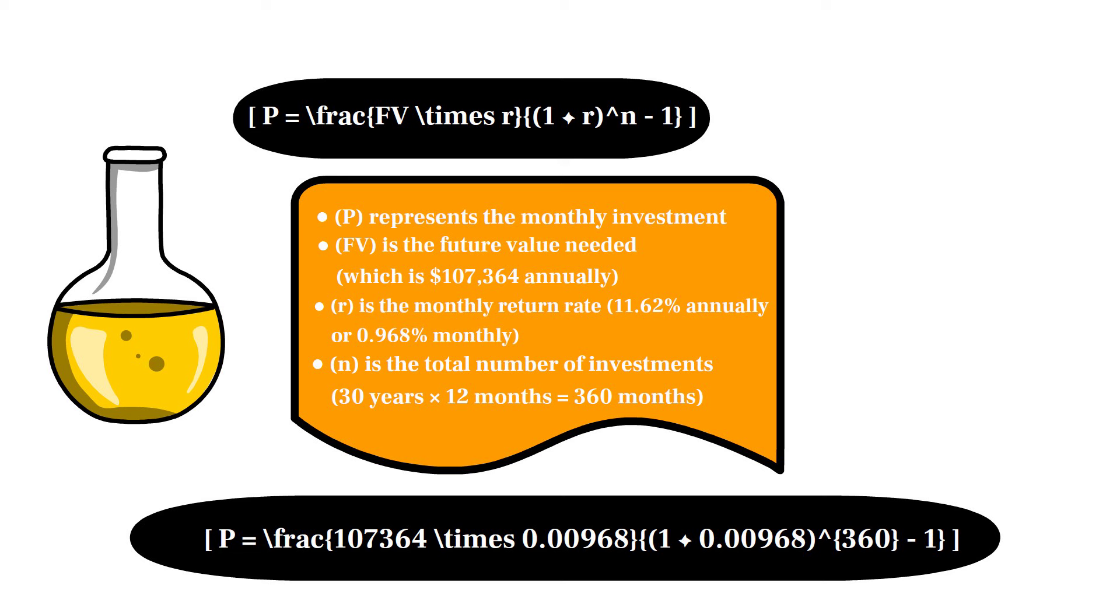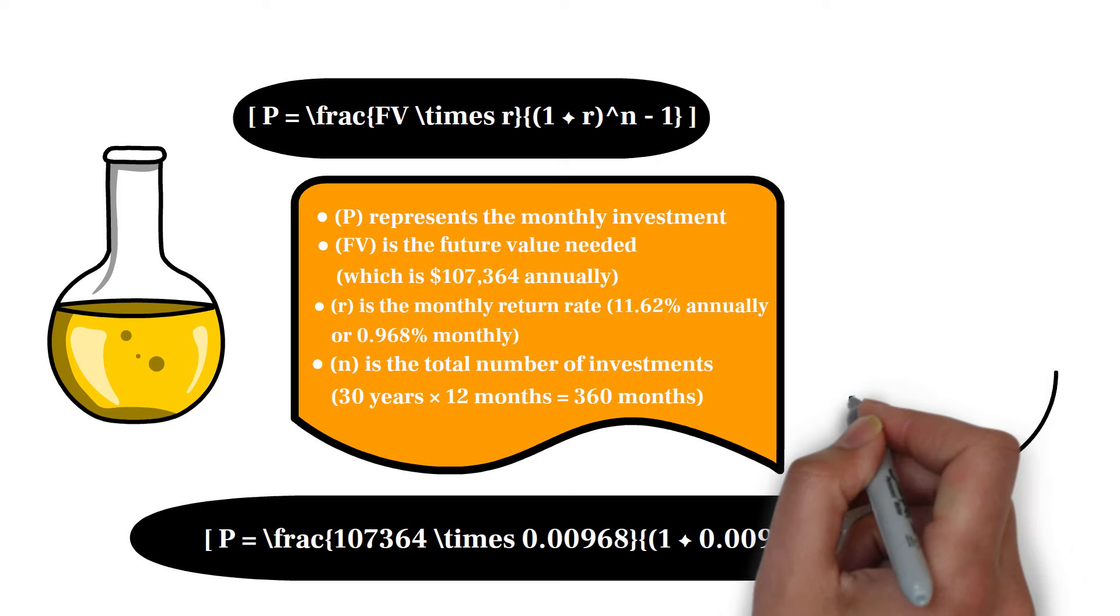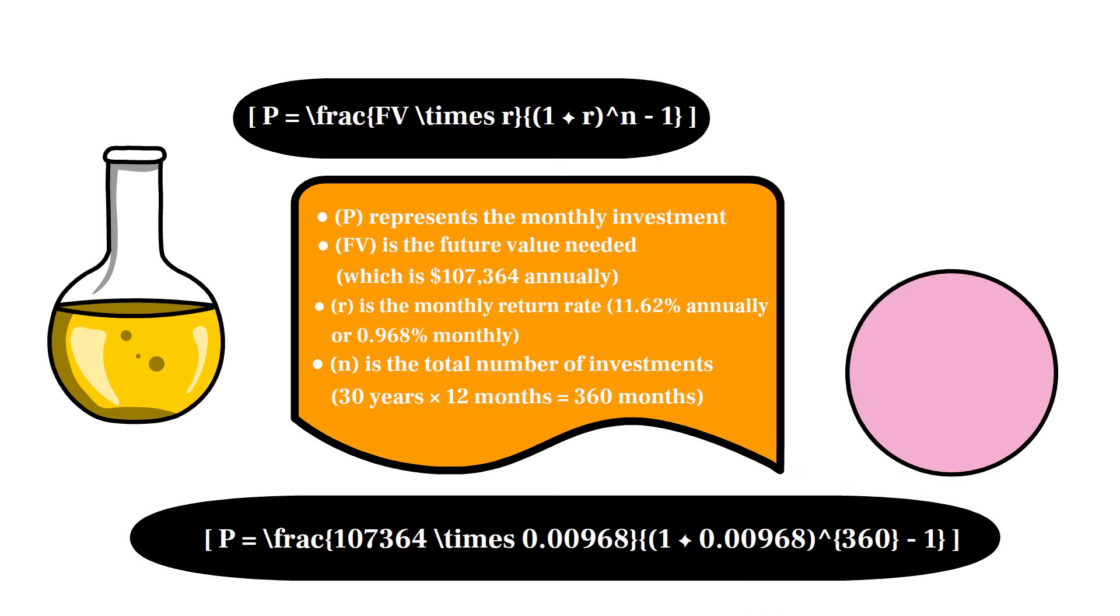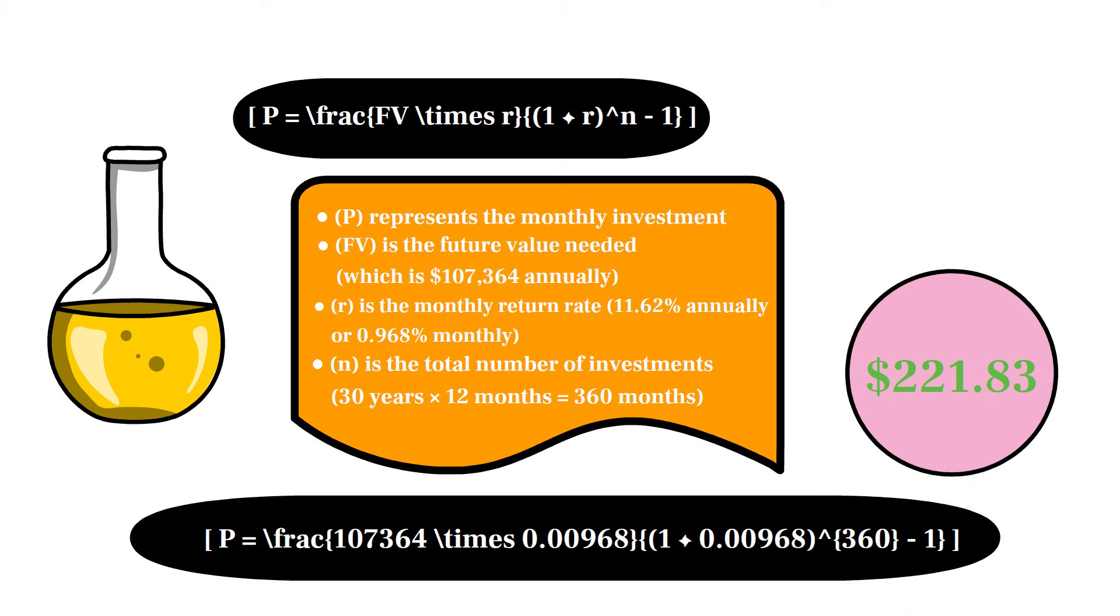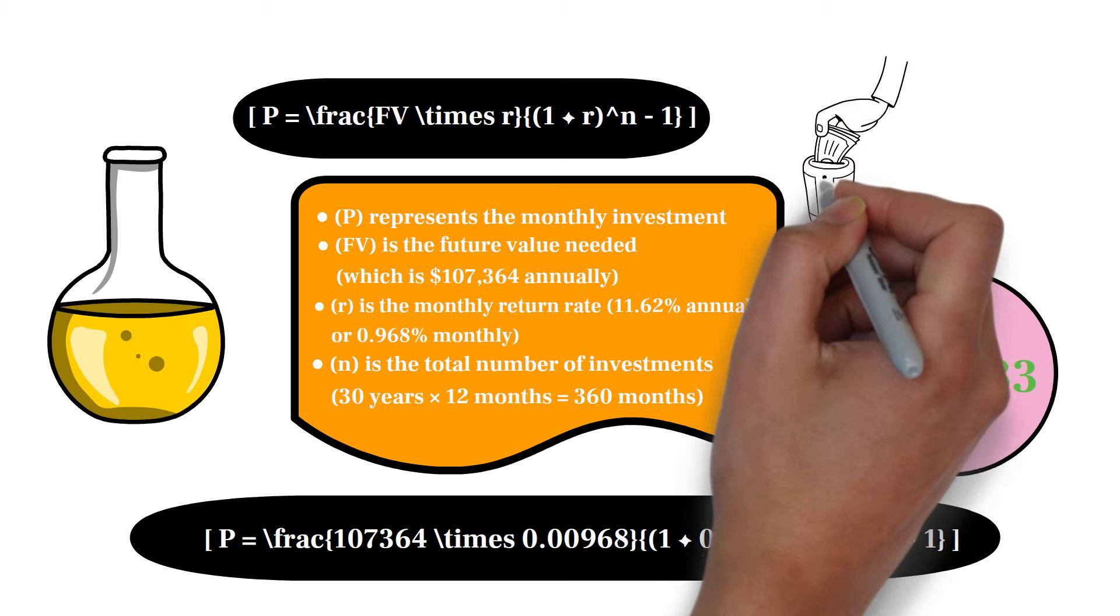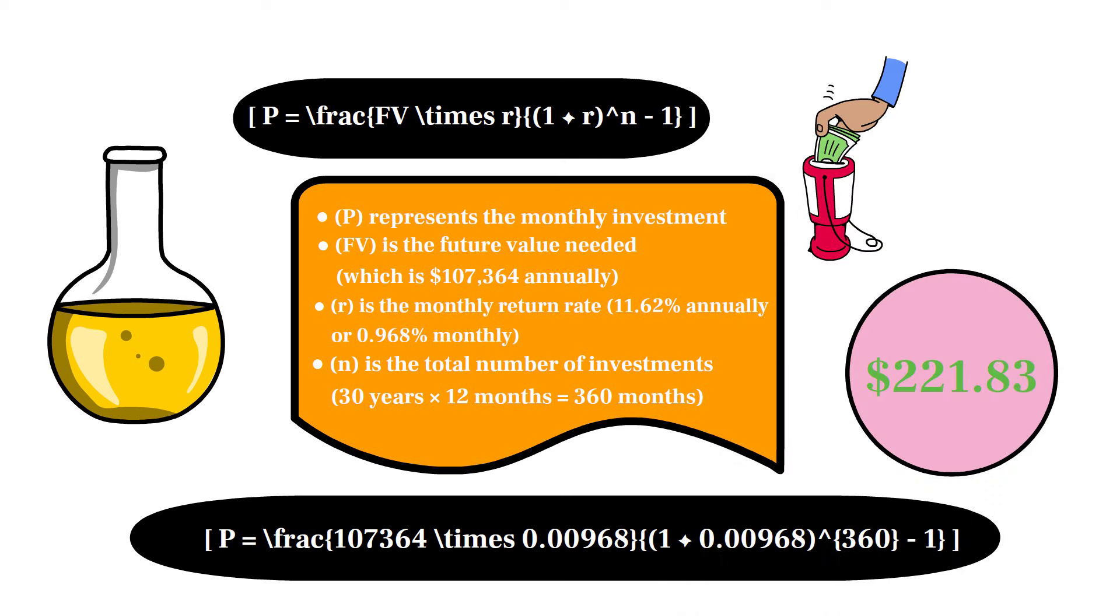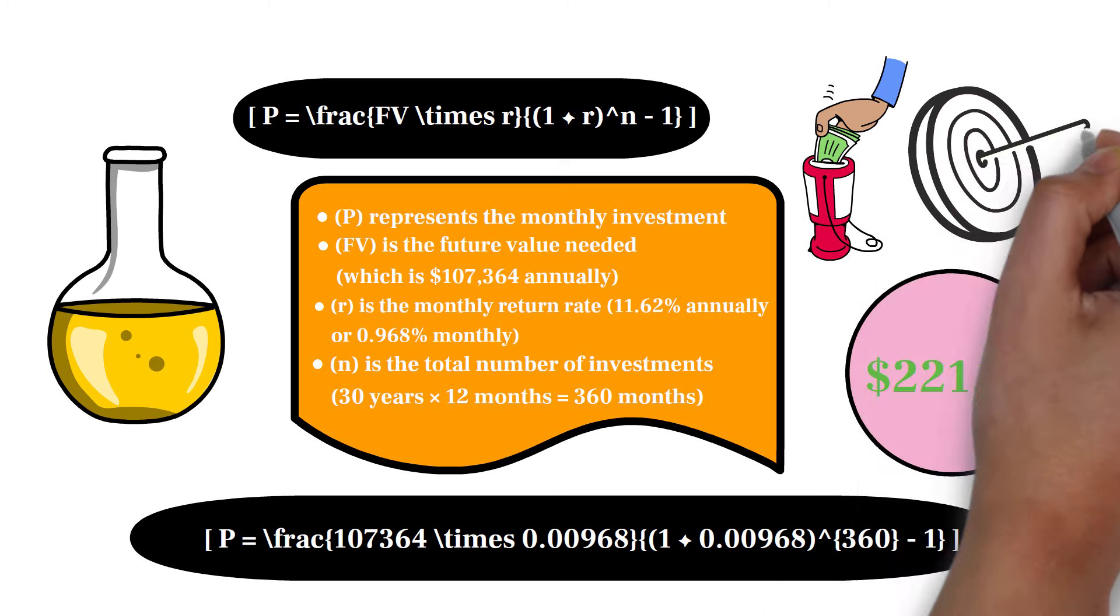Calculating this, p approximately equals $221.83. Therefore, you would need to invest approximately $221.83 per month to reach your goal of living off dividends in 30 years.